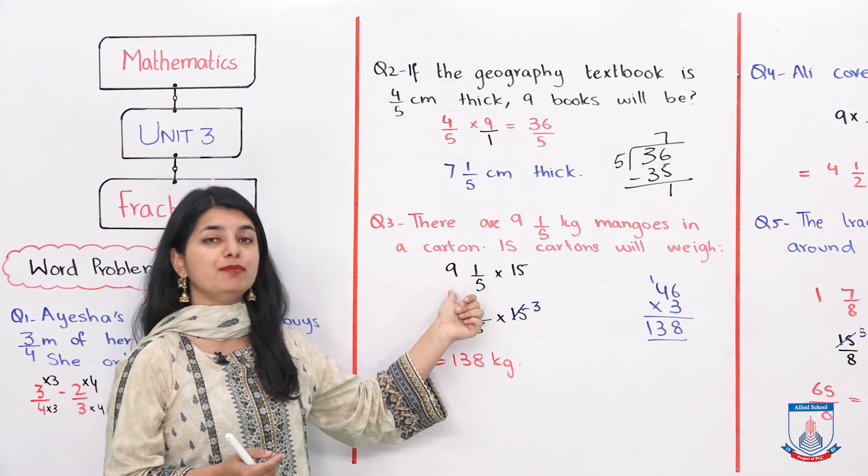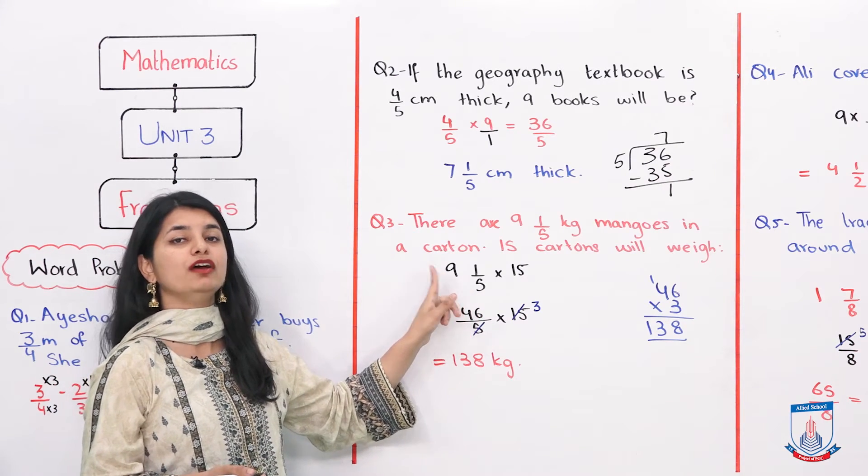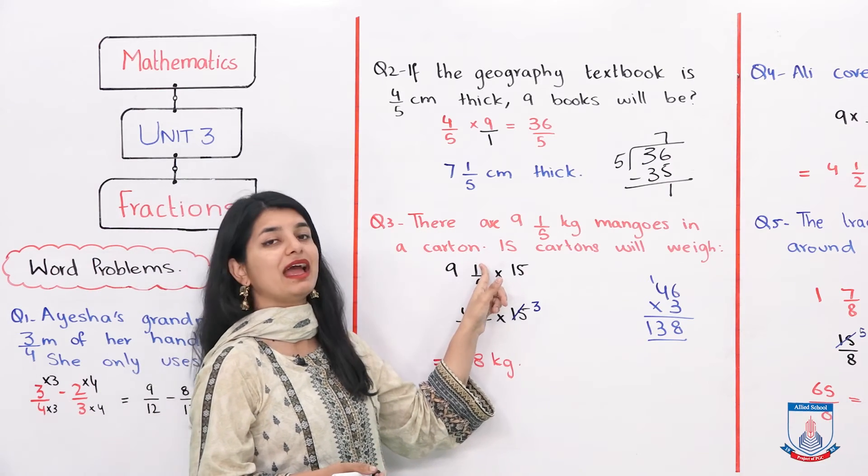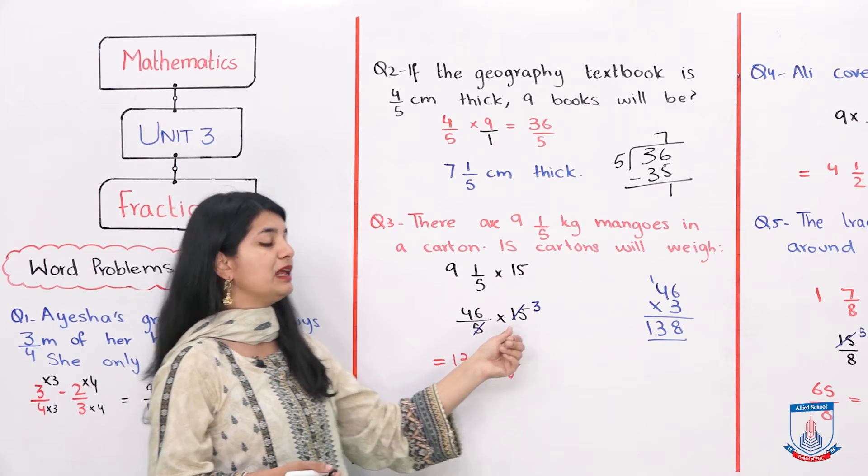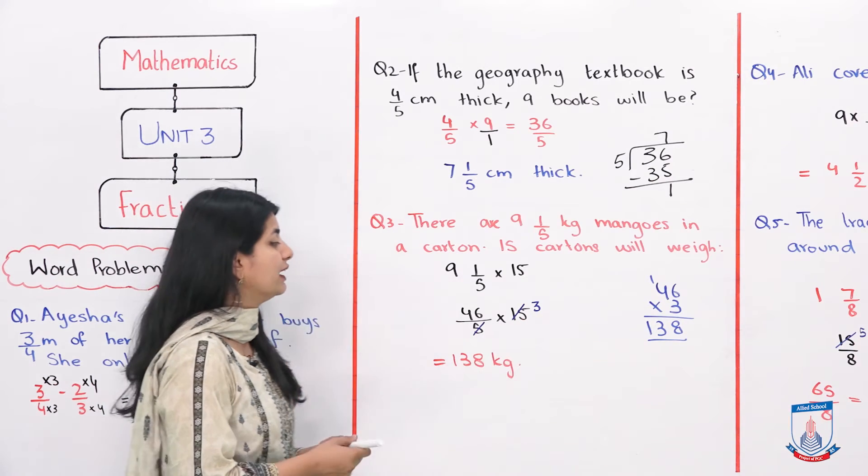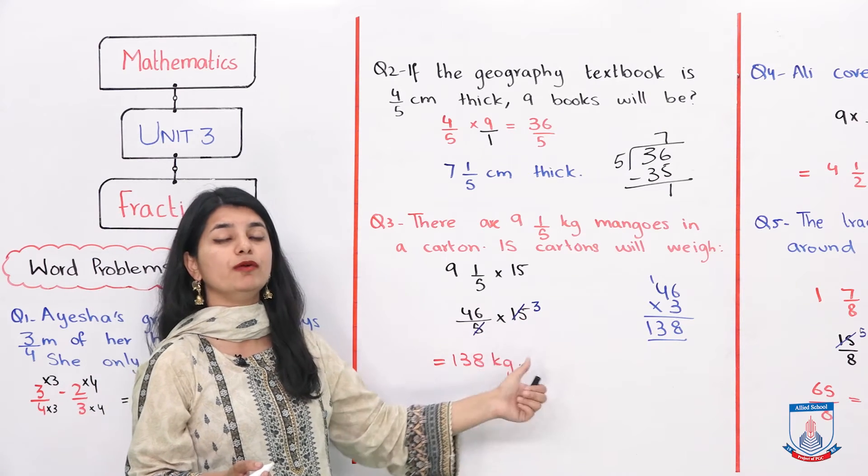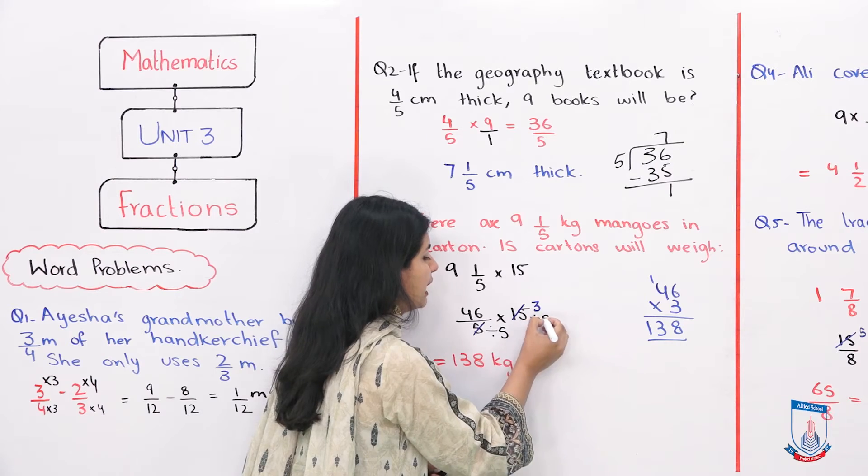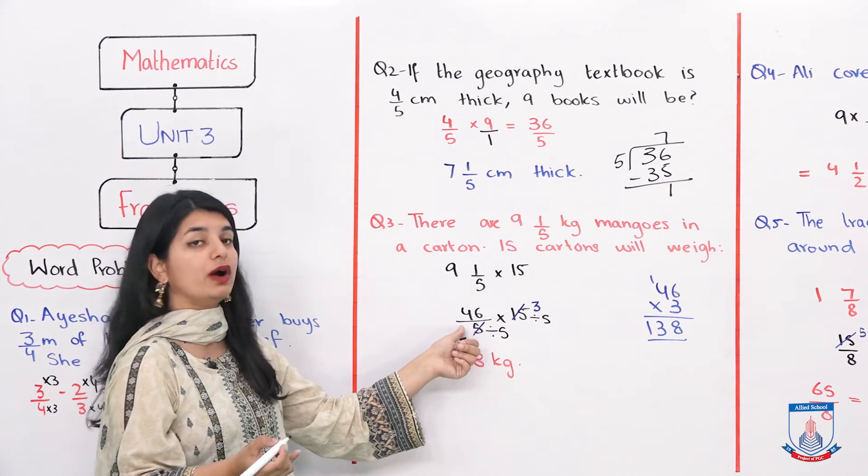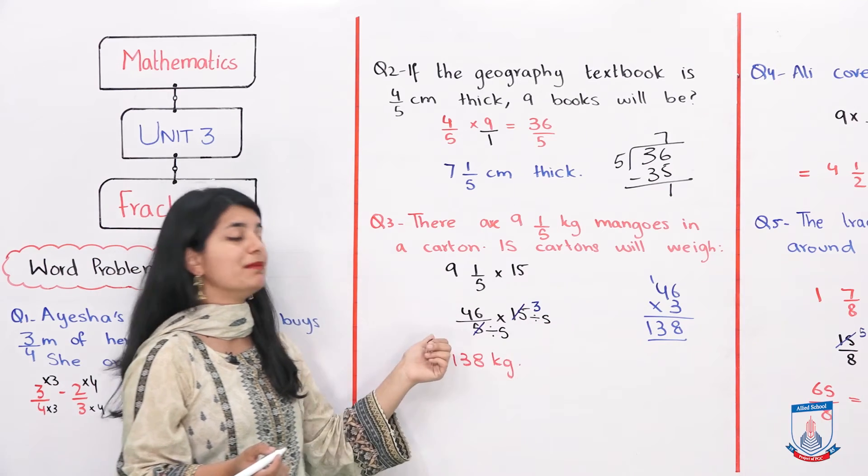We will convert this to improper fraction. What do we do? 5 times 9 is 45, plus 1 is 46. Denominator stays 5. 46 by 5 multiply by 15. Now we will cancel them. We will divide 15 by 5. We get 3 and here is 1. So basically we will do 46 into 3 divided by 1.